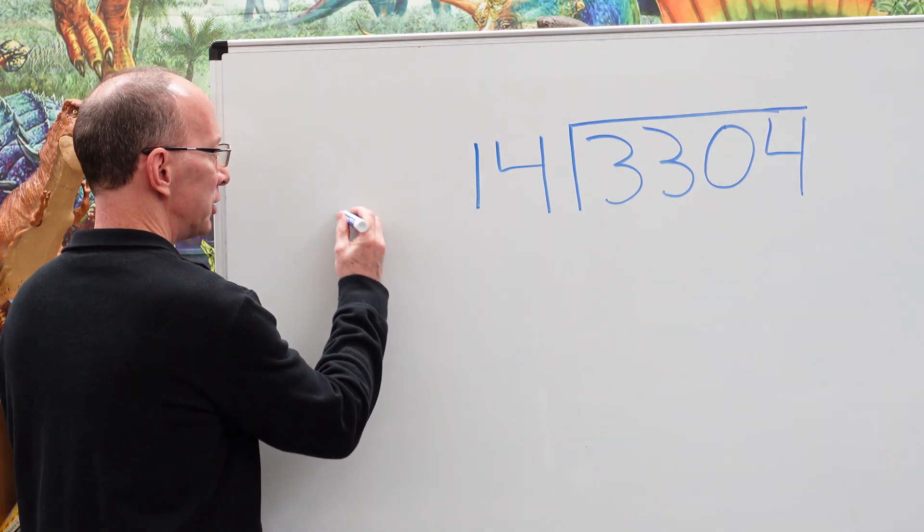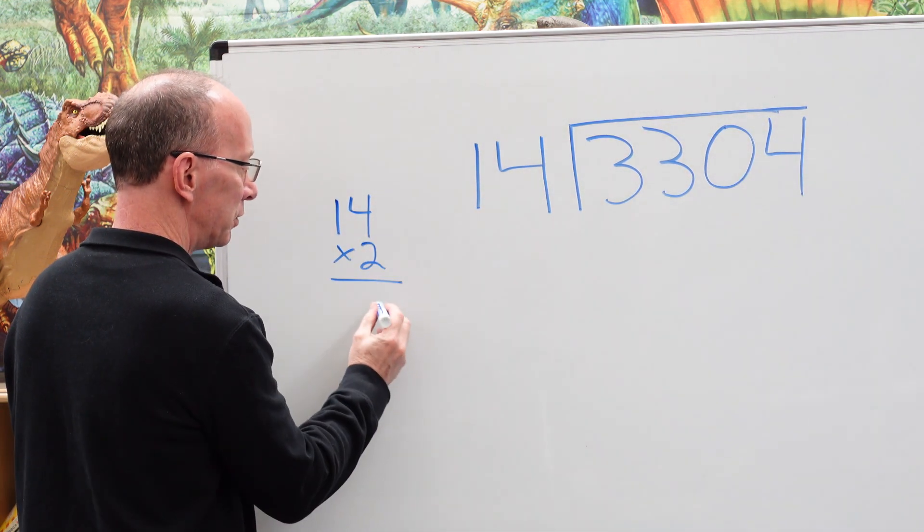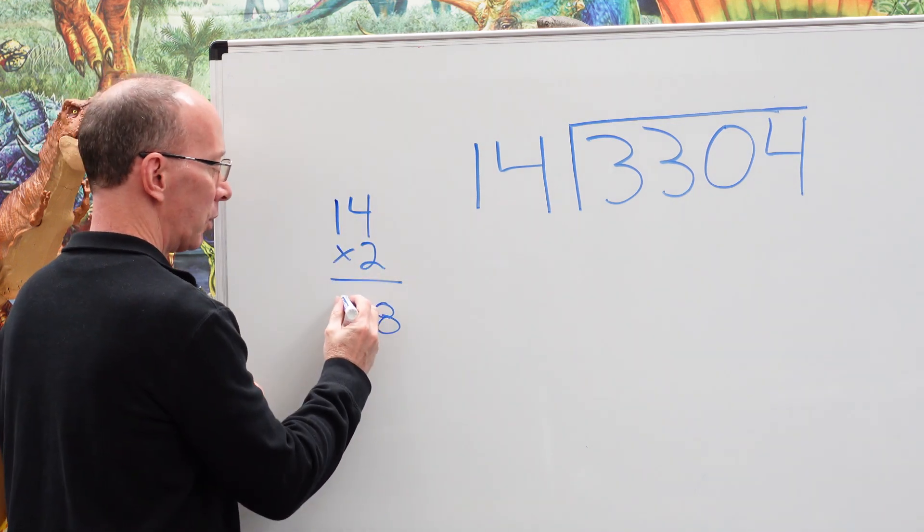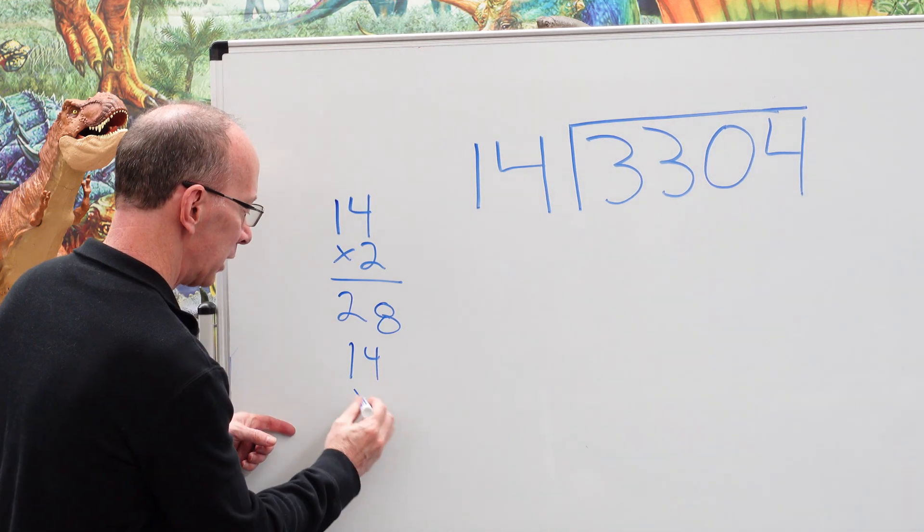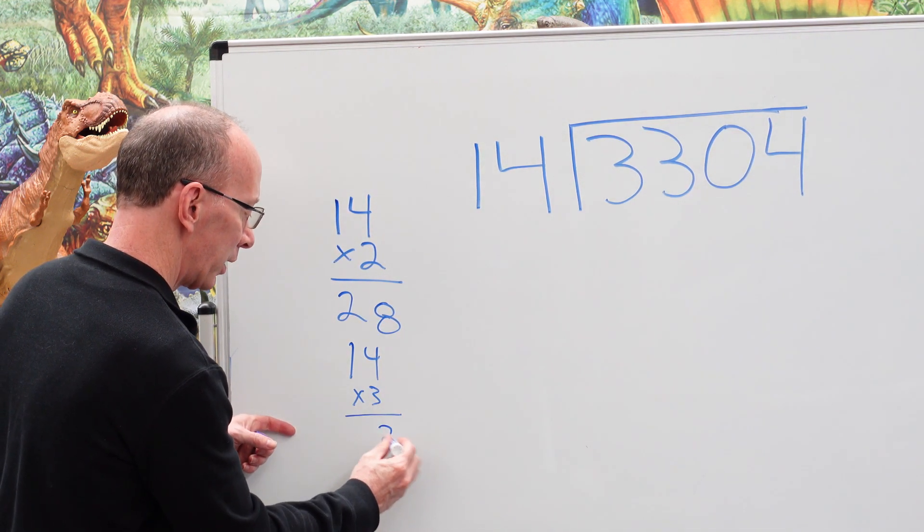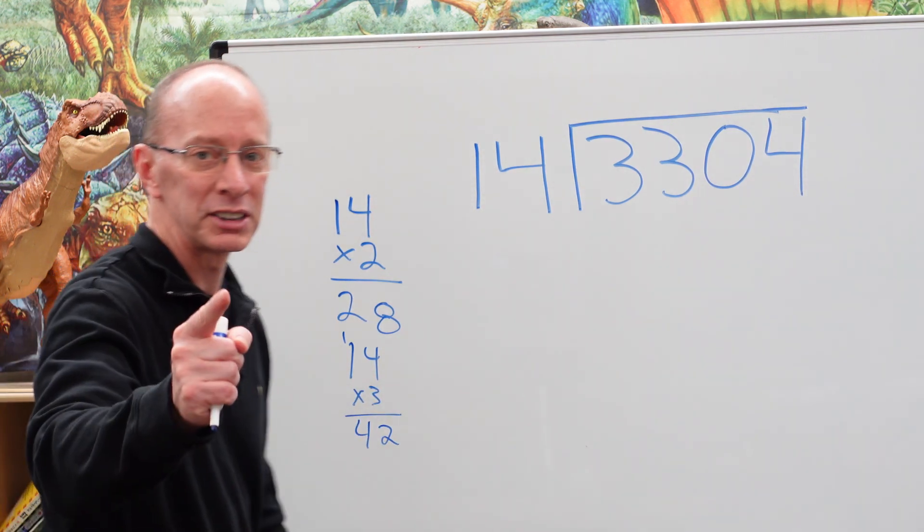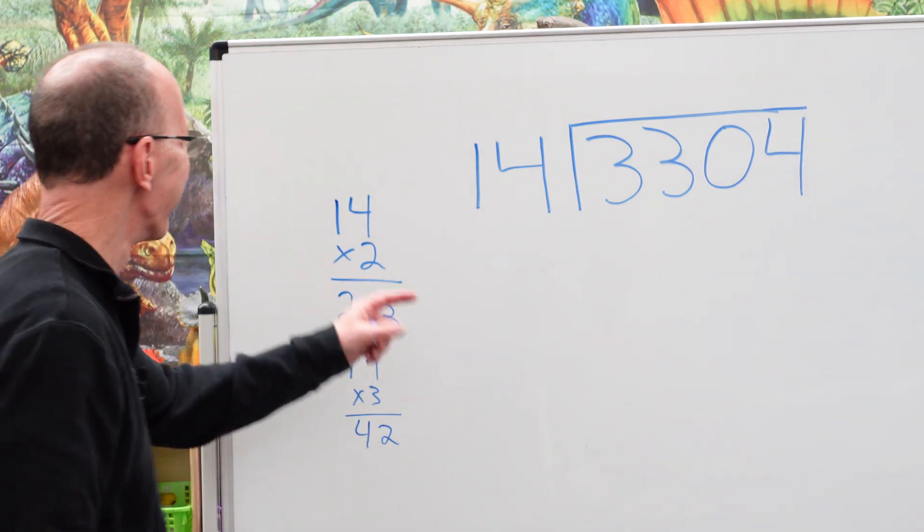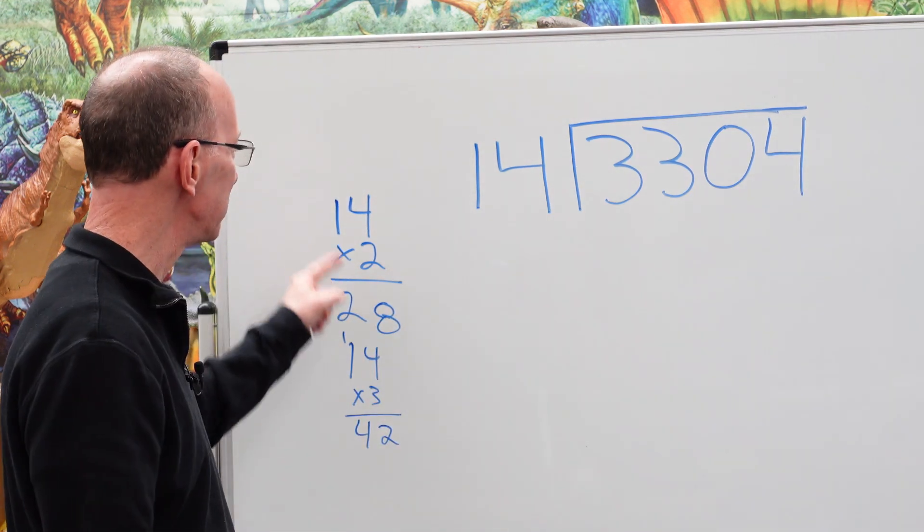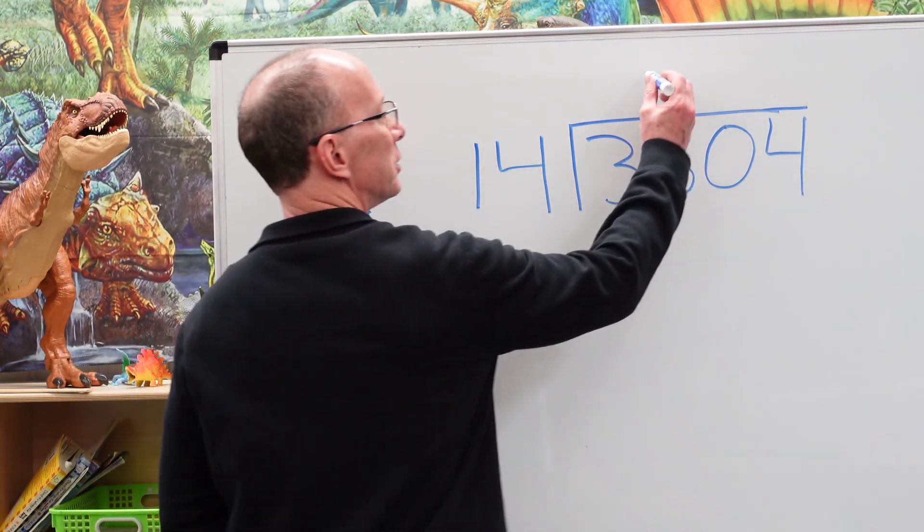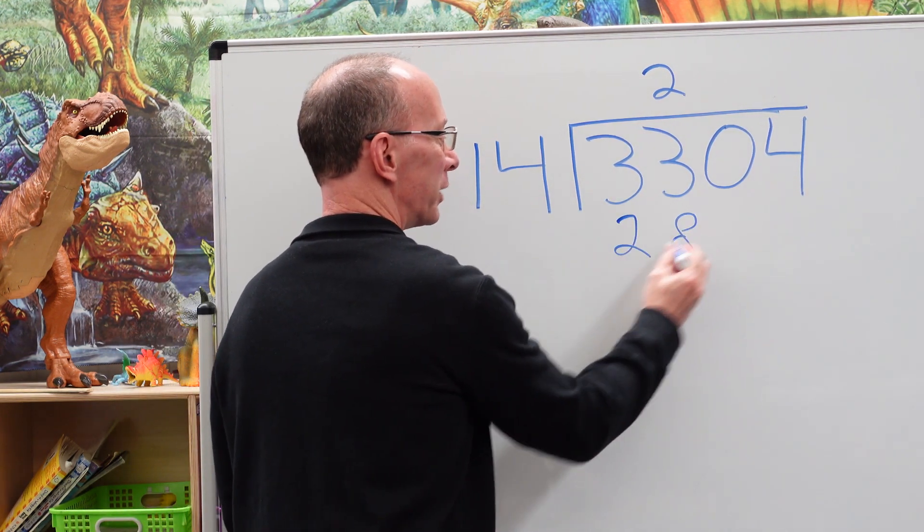So right here on the side I like to do a couple problems. So I'll do 14 times 2. So 4 times 2 is 8 and then 2 times 1 is 2. I'm just going to go ahead and do 14 times 3 just to see what it looks like. So 4 times 3 is 12 and then 3 times 1 is 3 plus the 1 is 4. Remember, steady your multiplication makes it so much easier. So I'm going to go ahead and use this one right here because 42 is too big. So we're going to use 14 times 2. So I'm going to put the 2 right here. 2 times 14, 28. Don't be late.